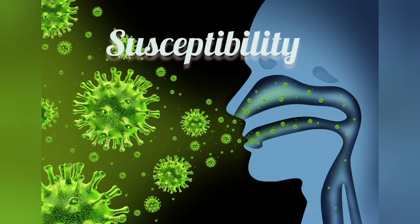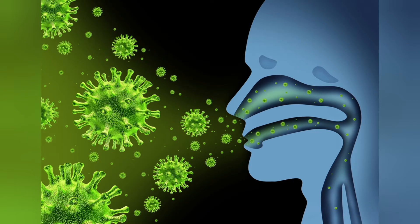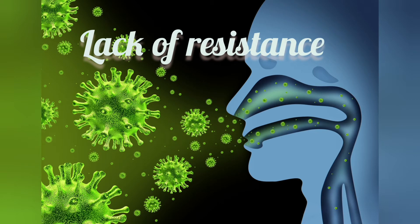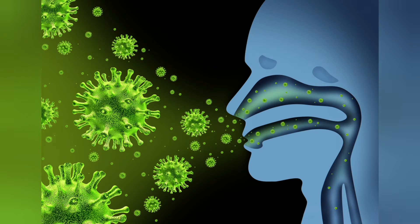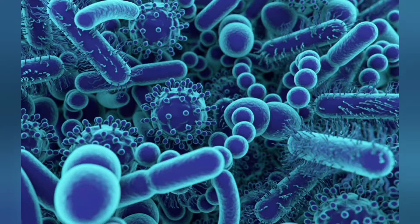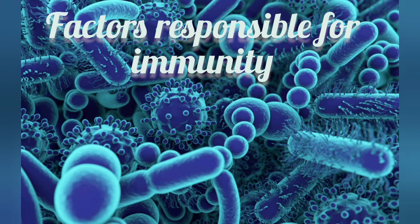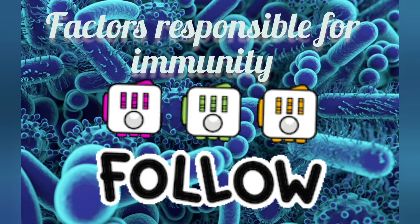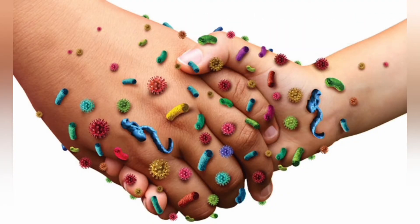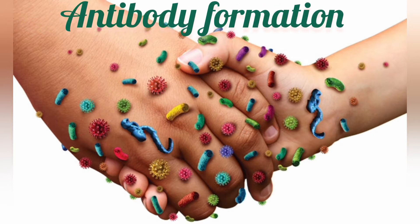Then what is susceptibility? The lack of such ability to resist infection caused by pathogenic microorganisms is called susceptibility. Now let's get to know what are the two factors which are responsible for immunity. The following factors are responsible for producing immunity in human beings: phagocytosis and antibody formation.